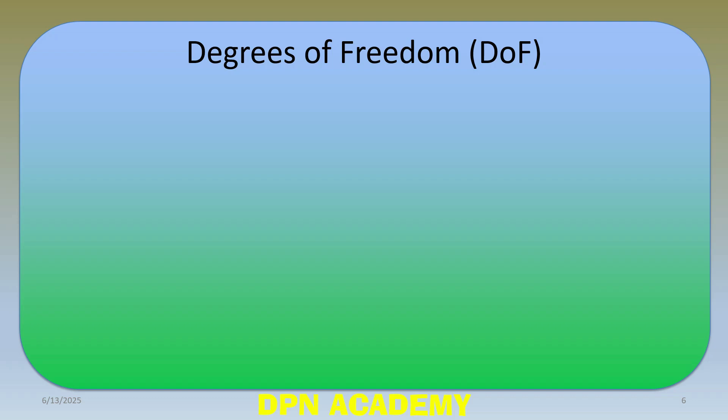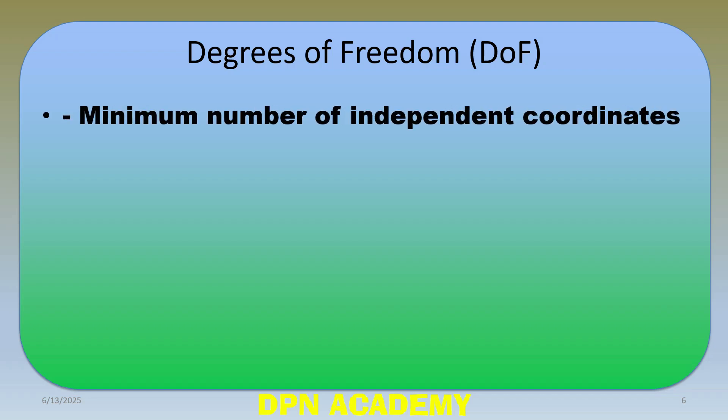Next we define degree of freedom — a most important topic. Degree of freedom is the minimum number of independent coordinates required to describe the configuration of a system. The formula for degree of freedom is 3N minus C, where N is the number of particles in three-dimensional space and C is the number of constraints. In some books, C may be replaced by K, but the meaning is the same.